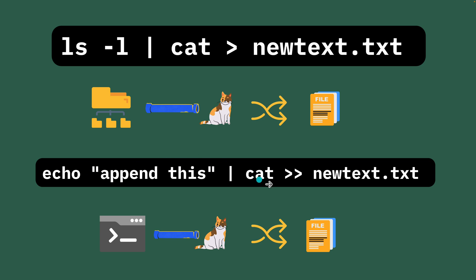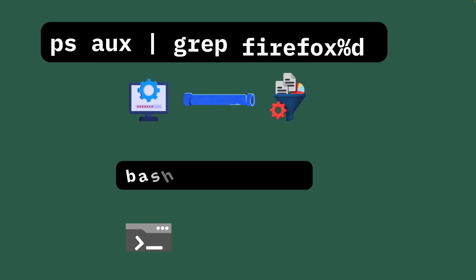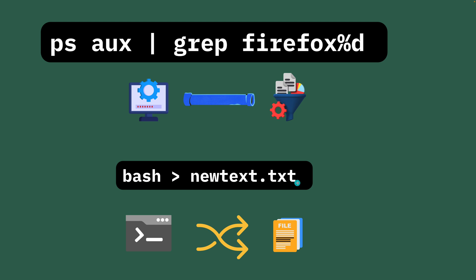When the cat has two greater than symbols, it performs an appending operation — it doesn't create a new file, it appends to the existing one. That's when you use the double greater than symbol. Another example is the Firefox grep operation using ps-aux: you pipe the output to grep as a filter to get exactly what you're looking for.